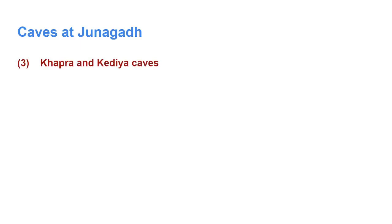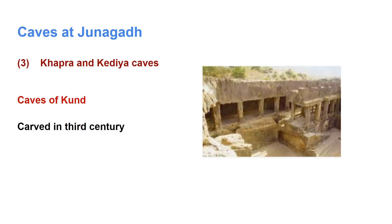The Khabrakeria caves are also known as the caves of Kund. On seeing the remains, it can be said that they were flawed caves and might have been carved in the third century. There are 20 pillars and they are in ruins now. They are the oldest caves in the group. These caves were built during Emperor Ashoka's rule and also contain artwork of Buddhism.